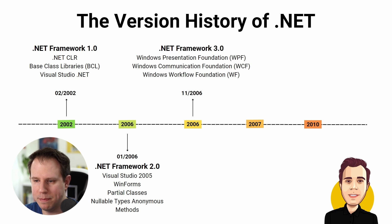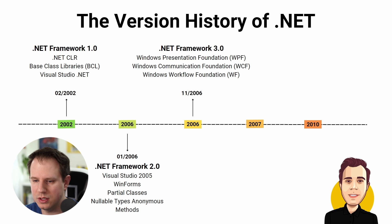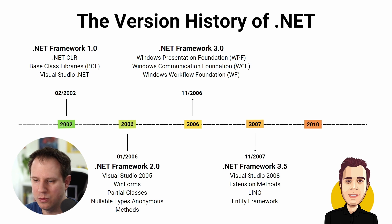.NET Framework 3.0 was released on November 6th, 2006. .NET Framework 3.5 was released on November 19th, 2007, and brought meaningful improvements and new features for existing technologies such as WPF and WCF. Most notably it included the new release of Visual Studio 2008, extension methods, LINQ, and Entity Framework.